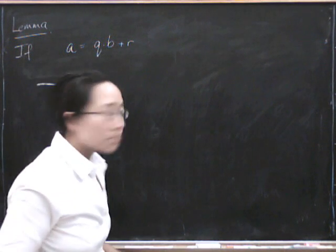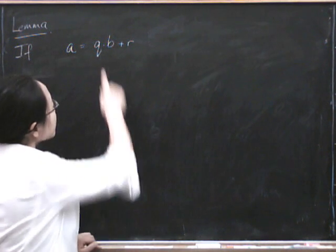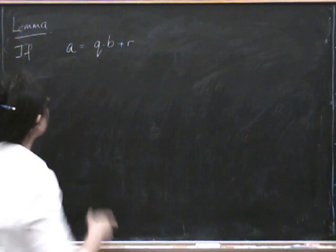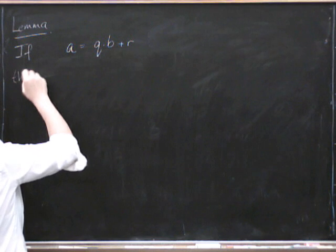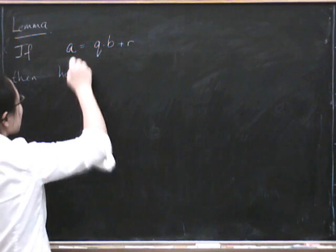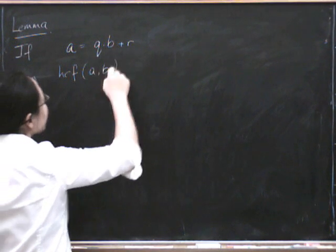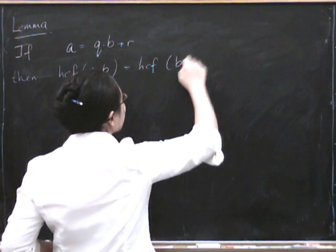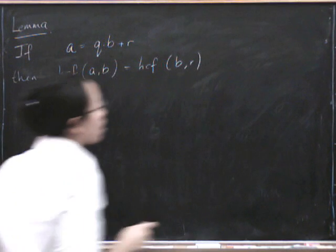so you might be interested in A and B, so you say to yourself, how many times is B going to A, it goes Q times, Q for quotient, and then there's a remainder left over. Then, the highest common factor of A and B is the same as the highest common factor of B and R.